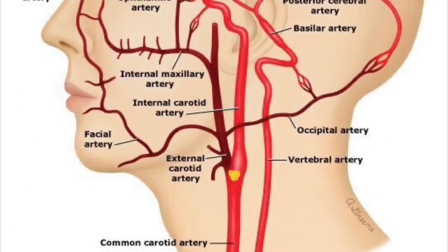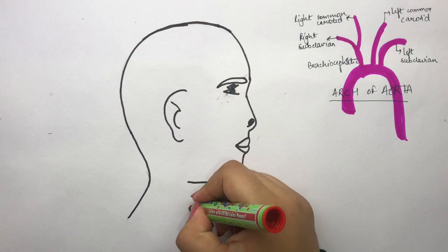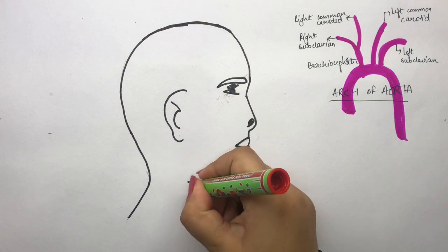Now if we look at this image, where the two arteries bifurcate, I have marked a yellow-colored structure. This structure is known as the carotid body, and it functions as a chemoreceptor — a sensory organ for monitoring arterial blood oxygen and carbon dioxide levels.